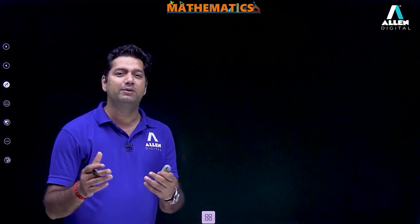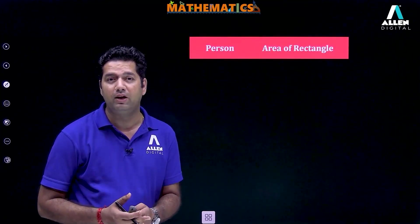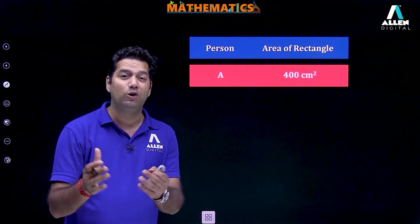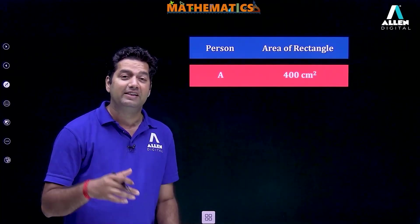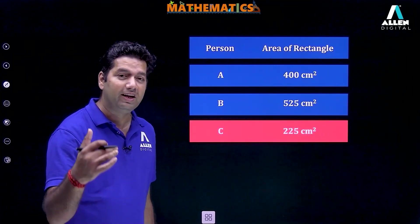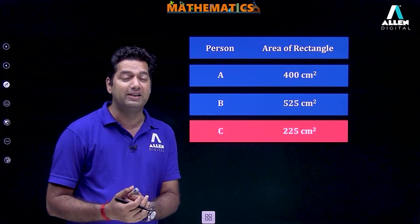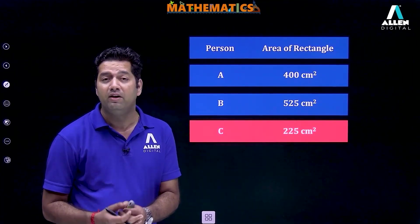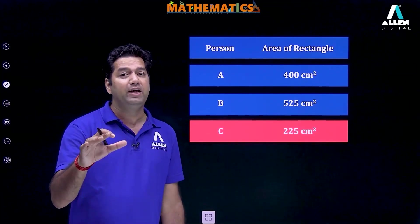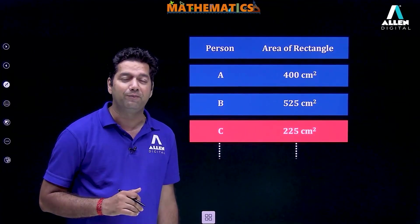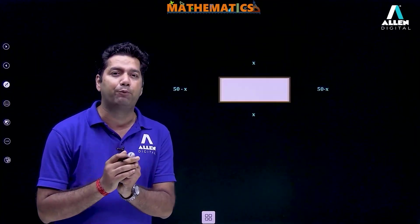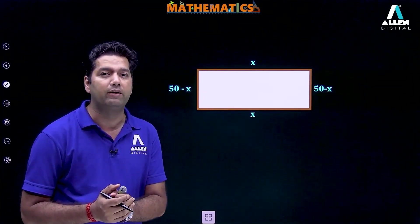Now, if we discuss the area formed by all three of them: by the first one, area is equal to 400 centimeter square. The second one, area of rectangle is equal to 525 centimeter square, and the third one, area of the rectangle formed is equal to 225 centimeter square. If this task is allotted to other people also, then we can calculate the area in the same manner. But what will be the appropriate approach by which we can calculate?